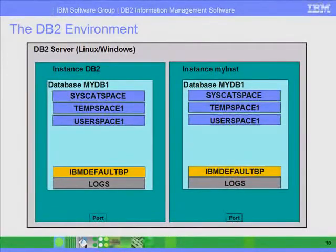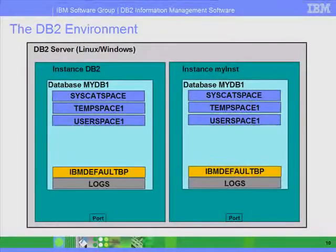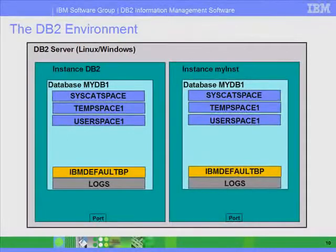Whenever you create a database, these same objects are created, so databases are also independent between themselves because each has these objects. The first one, SYSCATSPACE, is a table space that contains the catalog or dictionary, also known as metadata — the data about data. If you delete SYSCATSPACE, you're pretty much corrupting the database or making it unusable. Anything that starts with SYS, like in SYSCATSPACE, is created by the system, and normally you should not mess with those objects.